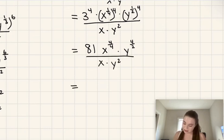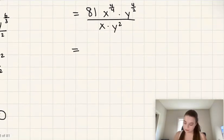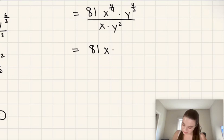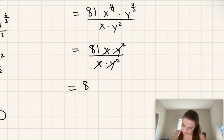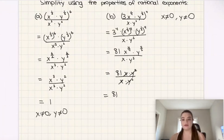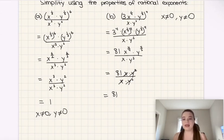On the next line I simplify the fractions: x to the power of 4 over 4 is just x to the power of 1, or simply x. And y to the power of 4 over 2 is y squared. So we can cancel x and y squared with the denominator once again, and the answer is just 81, provided that x and y do not equal zero. If x or y is zero, we end up with an undefined expression — b would be undefined rather than 81.